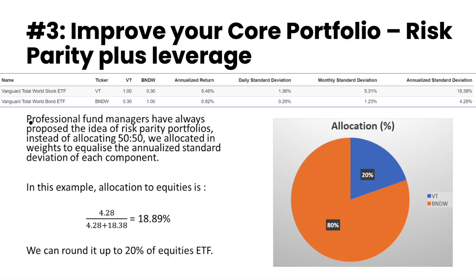The most complicated way to improve your core portfolio performance is to replicate some of what professional hedge fund managers do. They apply a technique known as risk parity plus leverage. Remember that we've allocated 50-50 to equities and bonds. There is a technique of improving portfolio performance by putting a higher ratio into the asset class that has lower risk. In this example, we are allocating into equities 4.28 divided by (4.28 plus 18.38), which is approximately 18.89% — rounded up to 20% — into the equities component.